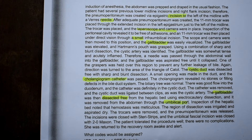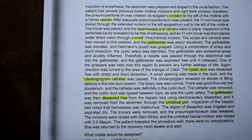Inspection of the hepatic bed noted that hemostasis was meticulous. The region of dissection was irrigated and aspirated dry. The trocars were removed and the pneumoperitoneum was released. The incisions were closed with Steri-Strips and the umbilical fascial incision was closed with 2-0 Maxon. The patient tolerated the procedure well. There were no complications — she was returned to the recovery room awake and alert. So this one is a little tricky because I saw multiple different approaches and they were doing inspections of different body parts but doing a more extensive procedure on the gallbladder, so this is a great example.